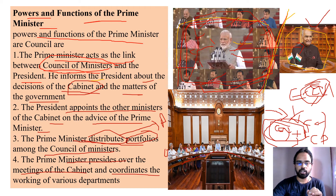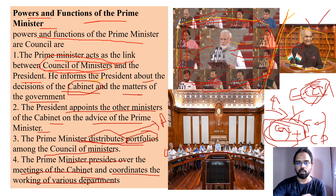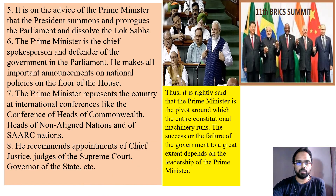The cabinet consists of important, senior-most members of the political party selected from the council of ministers. For example, if there are 20 members in the council of ministers, about 10 senior members may be selected as cabinet ministers. The prime minister presides over all cabinet meetings and coordinates the working of various departments — every ministry has different departments, and all are coordinated through the cabinet.